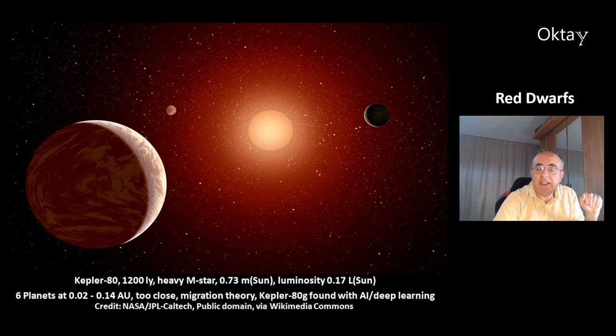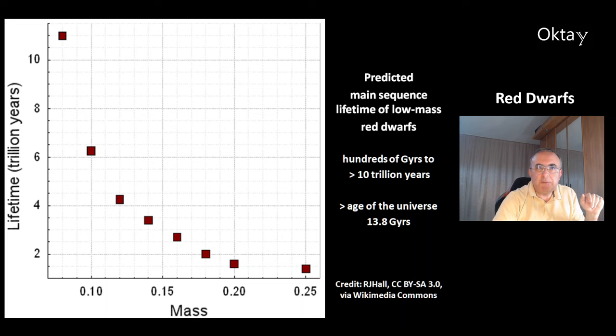This diagram shows the predicted main sequence lifetime on the y-axis versus the mass of a red dwarf. These are all low-mass red dwarfs, and you can see lifetimes ranging from hundreds of billions up to over 10 trillion years for the lowest-mass red dwarfs. For comparison, the age of the universe is 13.8 billion years.